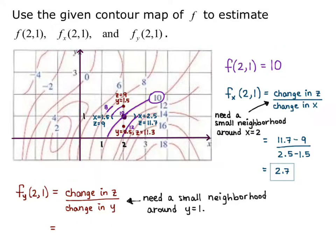So I do z2 minus z1, so 9 minus 11.3, over y2 minus y1, so 1.5 minus 0.5. And I get negative 2.3.